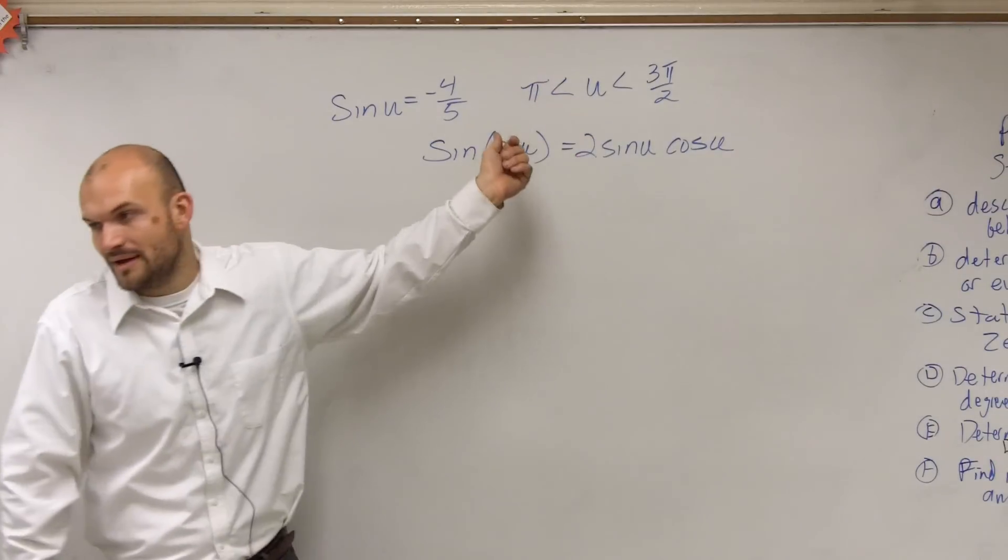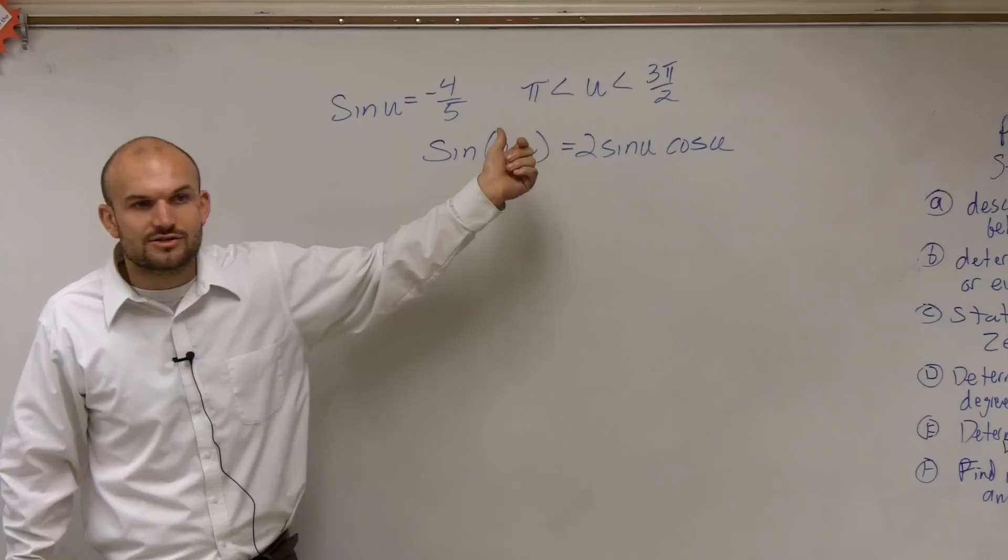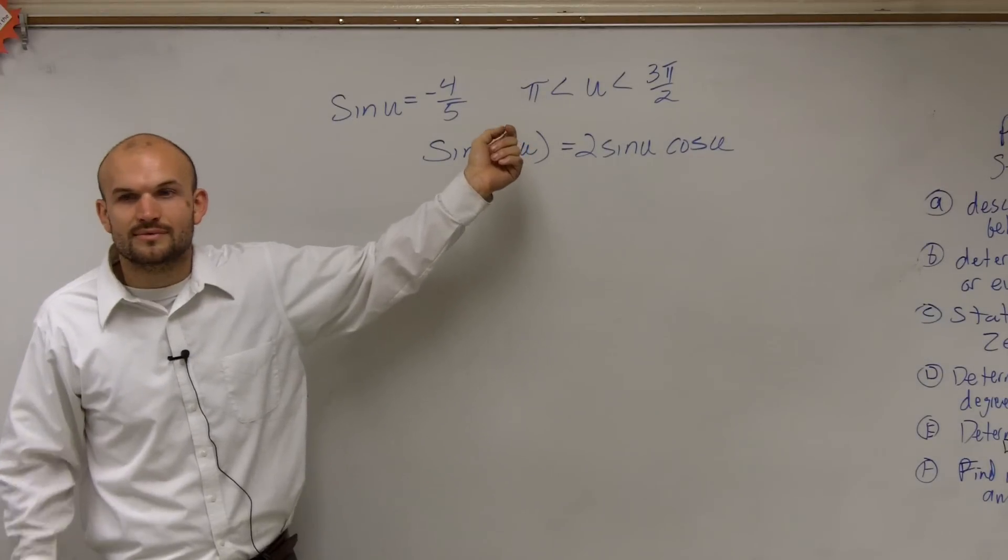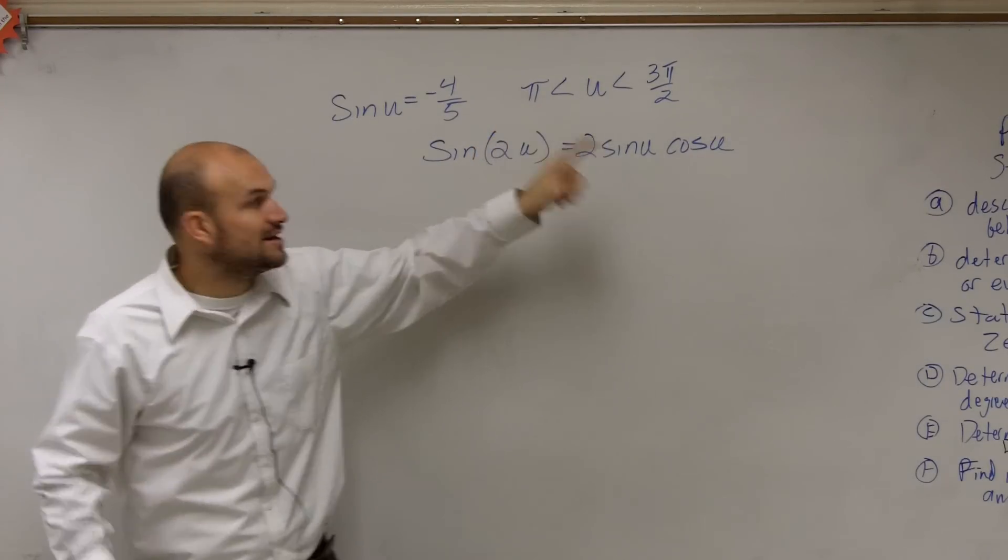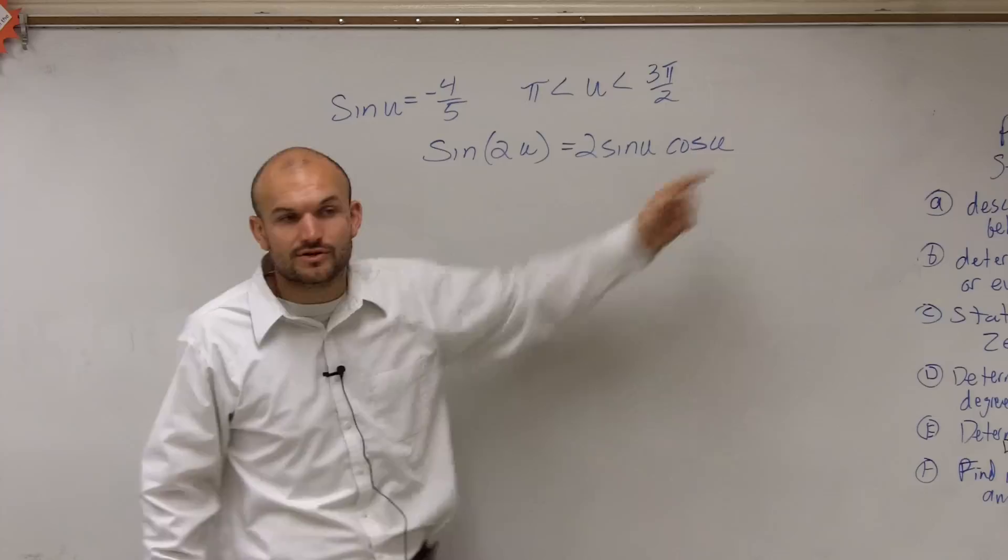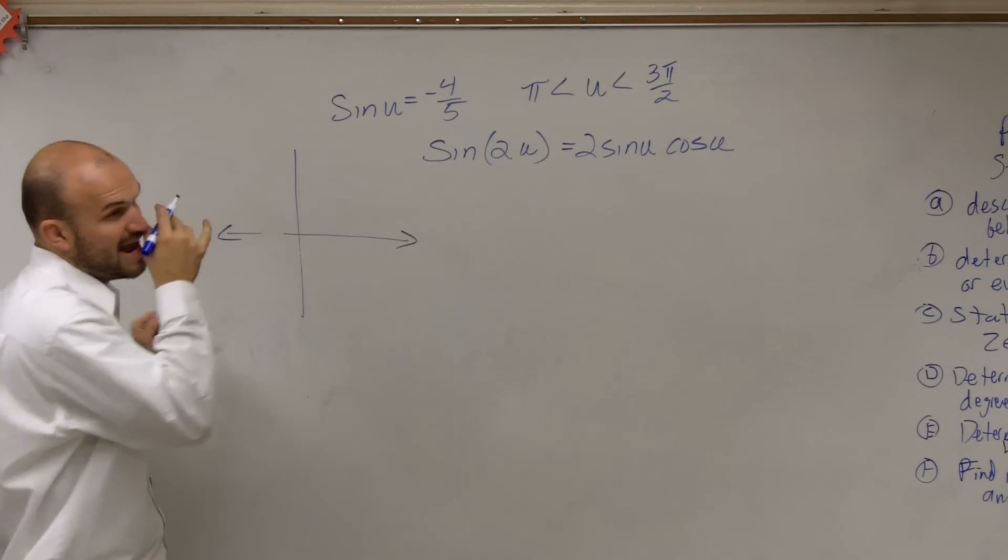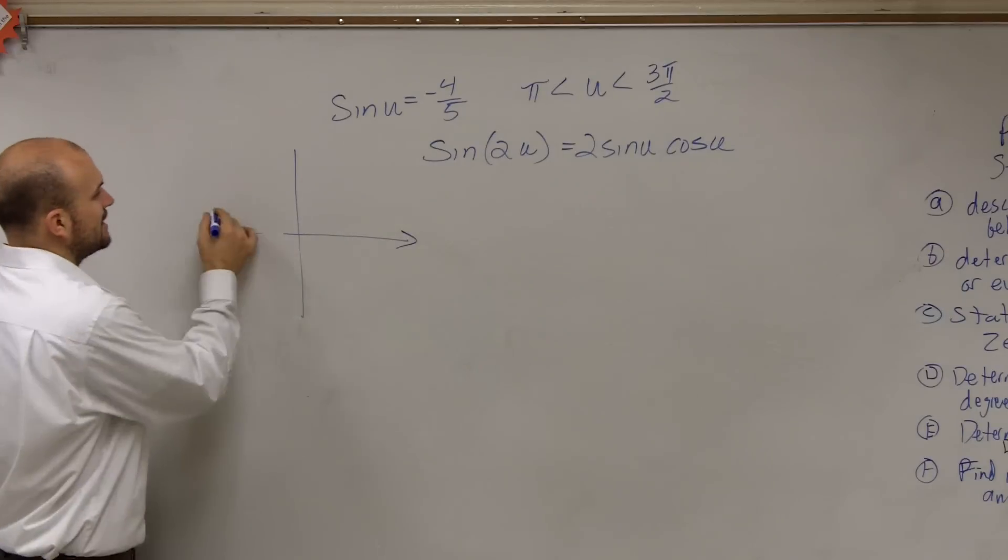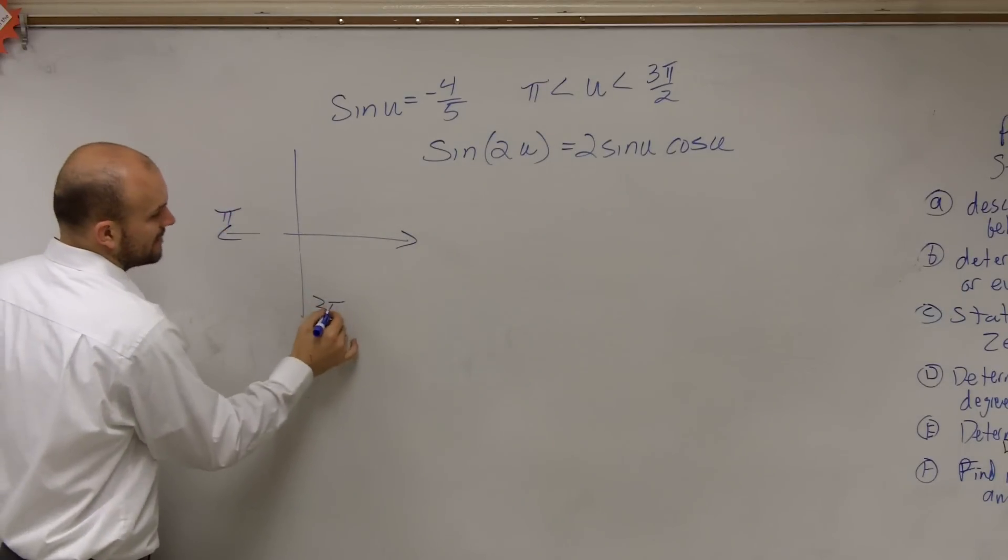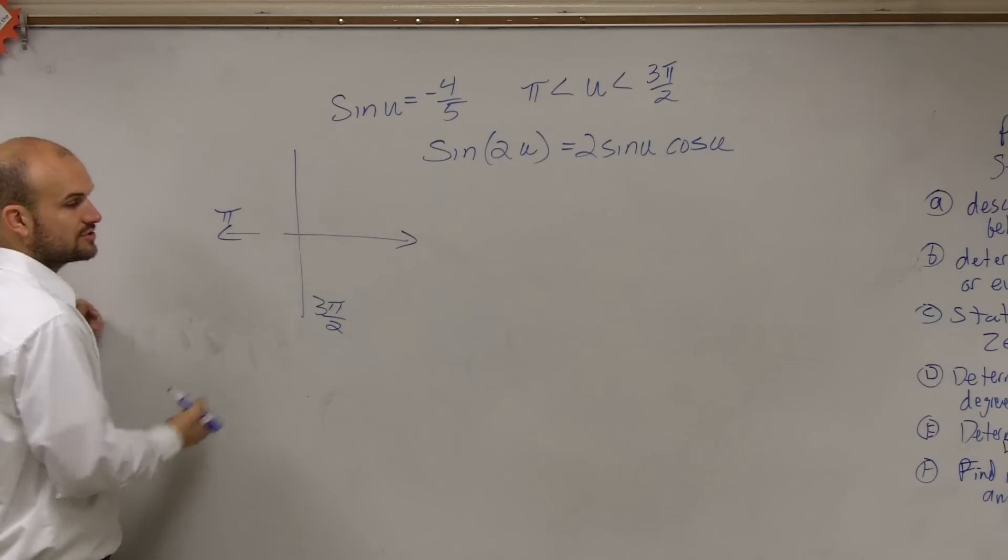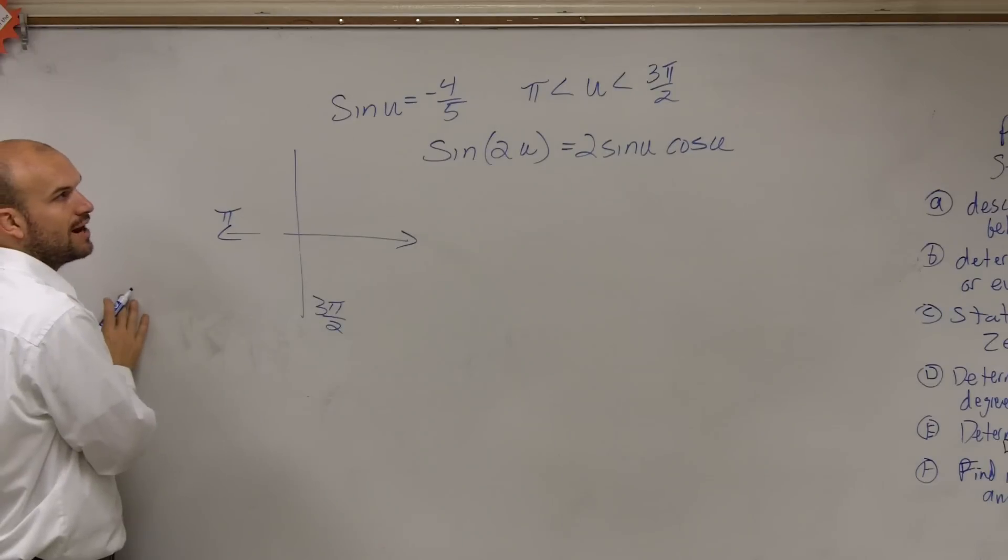But right now we don't have that on the unit circle, right? So we need to make sure we create a triangle, and we need to make sure we create a triangle that's within our constraint. So let's go and plot up our constraint here. So it says our angle u has to be between pi and 3 pi over 2. So that means my angle has to be in the third quadrant.